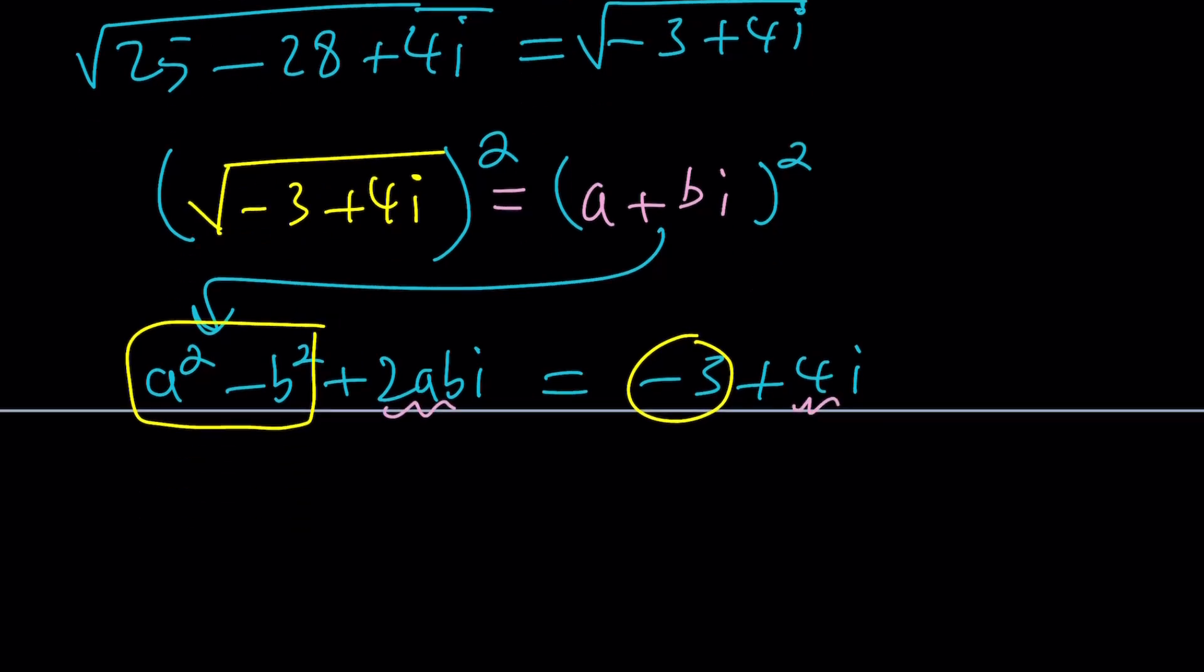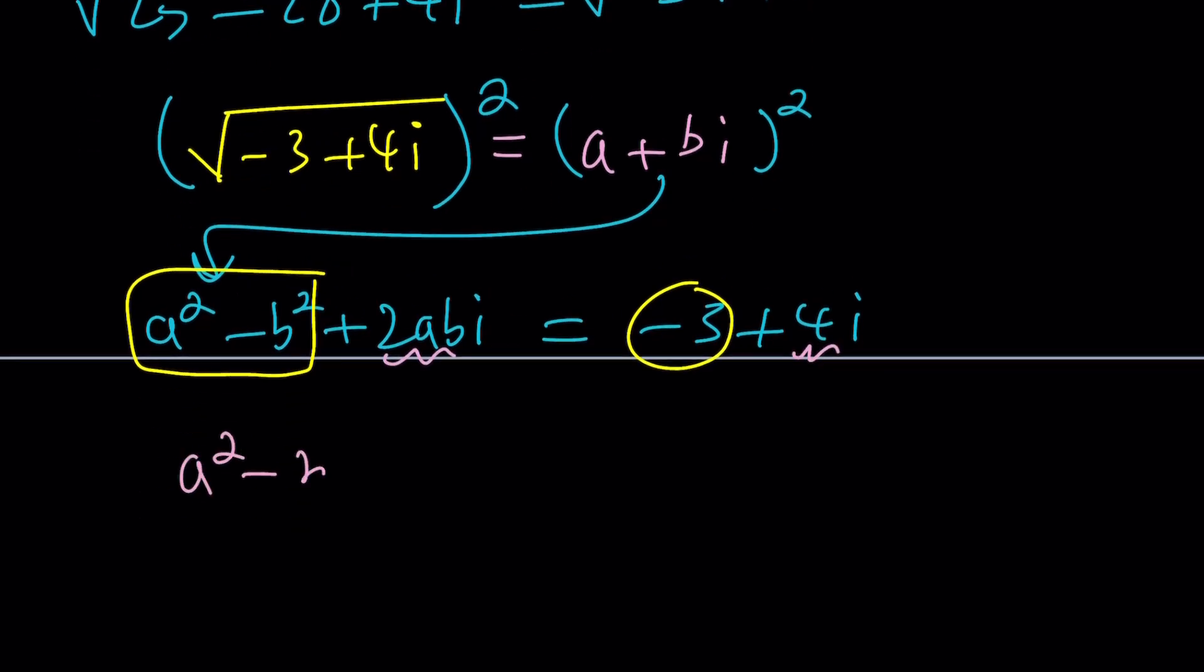And we have the imaginary part being equal to the imaginary part. That gives us the following. A squared minus B squared equals negative 3. And 2AB equals 4, which means AB equals 2. Now, you can go ahead and use substitution in this case. You can't use elimination, right? But you could use substitution to solve the system. This is just another system.